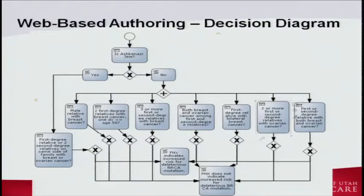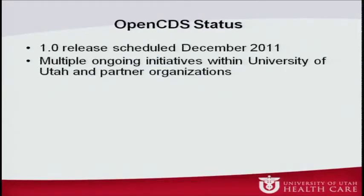Our latest addition is decision diagrams. You can see here how we're encoding family history risk analysis for identifying if a patient is at increased risk for BRCA mutations. As a status update, we are releasing a 1.0 release later this month; we already have a beta release available to interested parties, and we have multiple ongoing initiatives.